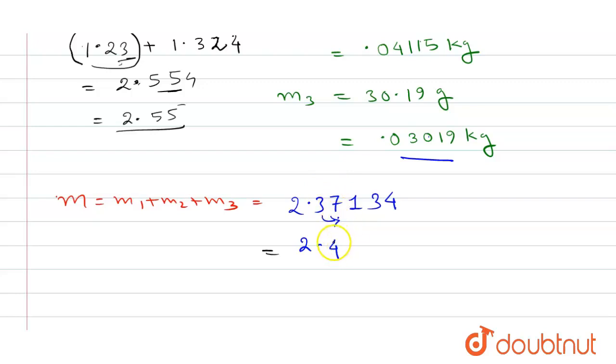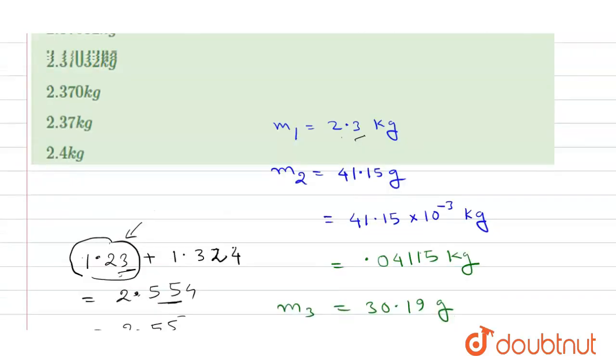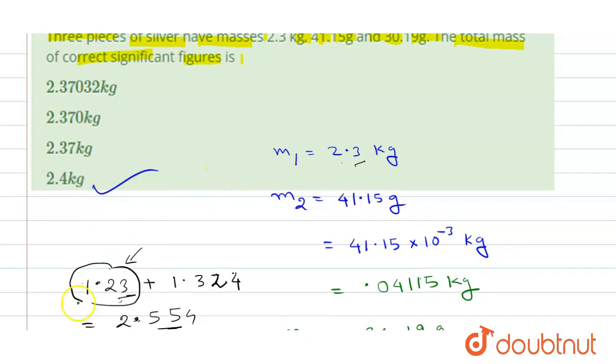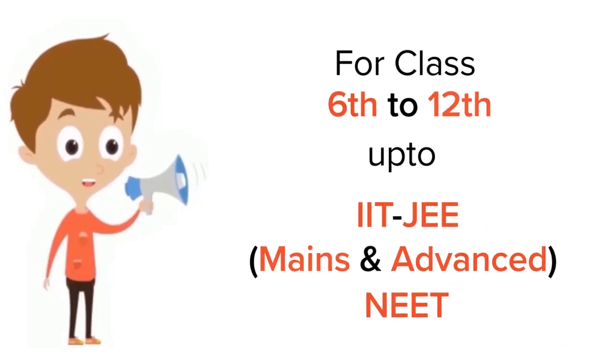So it will be 2.4, as beside 3 it is 7. This is greater than 5, so the value of 3 must increase by one place. So it will be 2.4. So our correct option will be 2.4 kg.